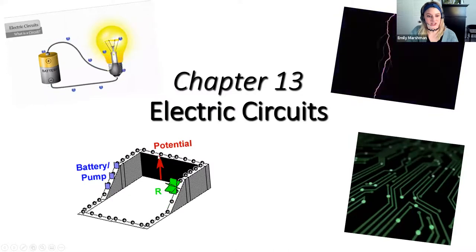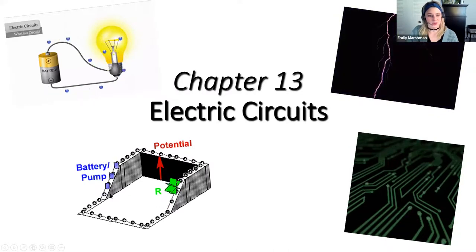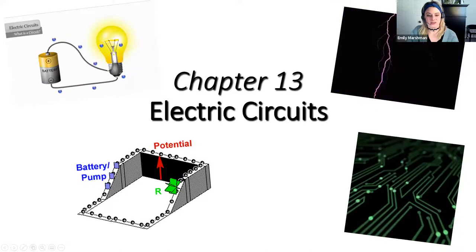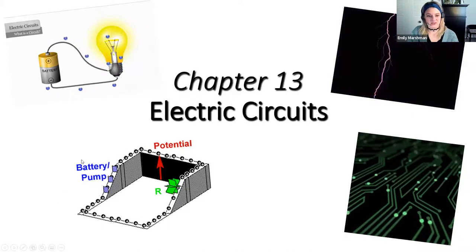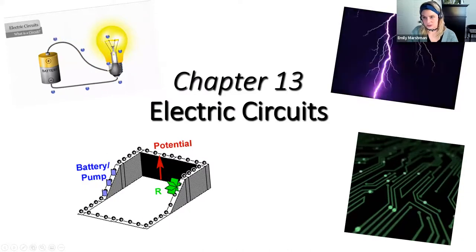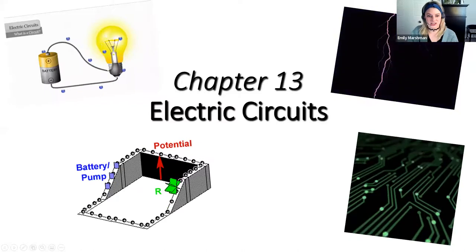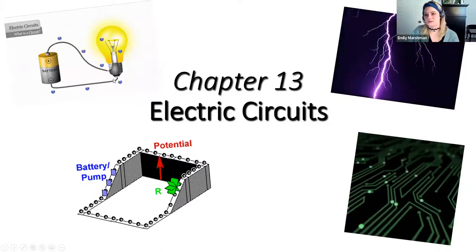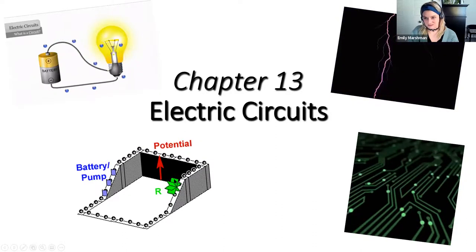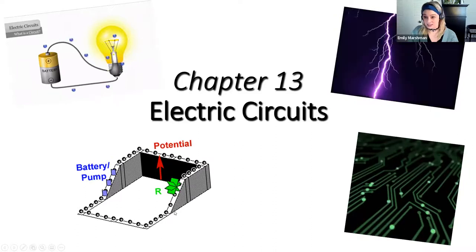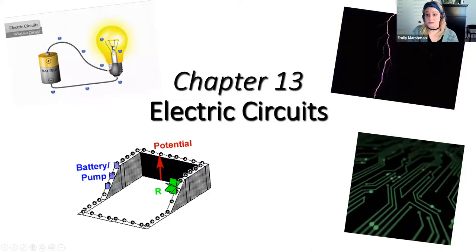In an electric circuit, energy conservation still applies. The energy provided by the battery is exhausted by all of the circuit loads, like light bulbs. This is similar to a water pump analogy: water is pumped up from a well, flows through a fountain, and back down again. As it flows, it can do work like turn a paddle wheel. The battery provides potential energy to charges, which is then used up in circuit elements.